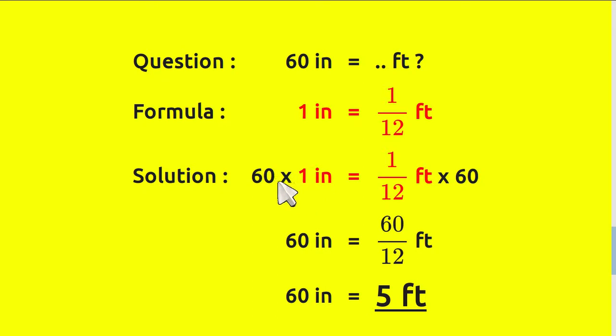And 60 times 1 equals 60 inches, and 60 times 1 divided by 12 equals 60 divided by 12. Let's continue. 60 divided by 12 equals 5 feet, so 60 inches equals 5 feet. That's all of it. Thank you for watching.